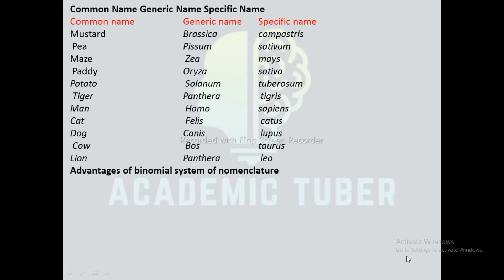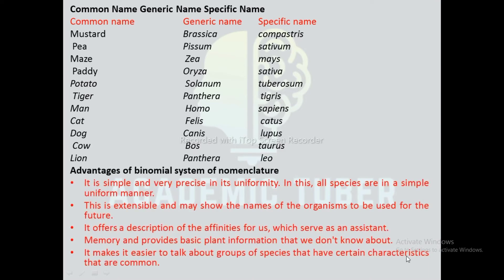Advantages of binomial system of nomenclature: It is simple and very precise in its uniformity; all species are named in a simple uniform manner. It provides accessible names that may be used for the future. It offers a description of the affinities of organisms and provides basic information. It makes it easier to talk about groups of species that share certain common characteristics.